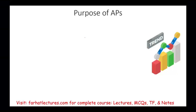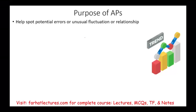What is the main purpose of analytical procedures? To help us spot unusual fluctuation or unusual relationships. We expect certain relationships — for example, interest expense should be related to total debt, depreciation expense should be related to fixed assets, and gross profit margin should follow a consistent trend depending on economic conditions. Anything unusual — any unexpected fluctuation or unusual relationship — will be spotted.